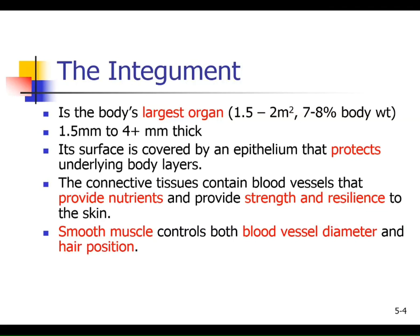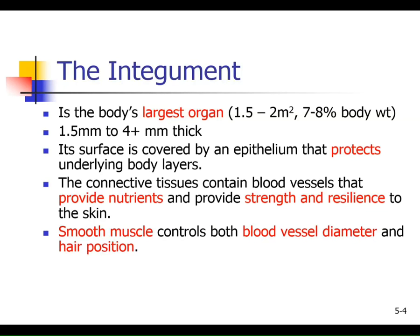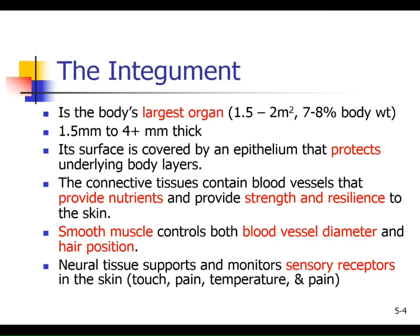When you think about skin, remember from the very first day we talked about how tissues combine to make organs. There are four kinds of tissues — epithelial, connective, muscle, and nervous. A chunk of skin contains all of those tissues arranged together: epithelial in the outer layer, connective tissue as the dermis, and muscle inside your dermis — because every time you're scared, those little hairs go up.